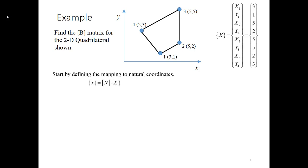Start by defining the mapping. The mapping is where we say the x vector is equal to the shape function matrix times the capital X vector, which is the nodal position. The capital X vector is X1, Y1 — the X and Y position of node 1 — so that's 3, 1; then 5, 2 for node 2; 5, 5 for node 3; and 2, 3 for node 4. That's how the capital X vector is set up.